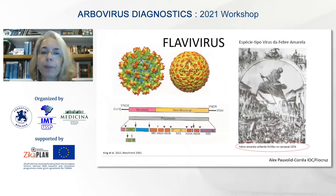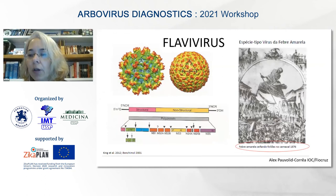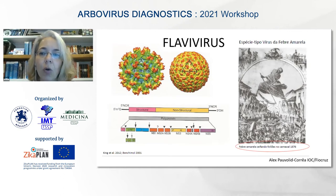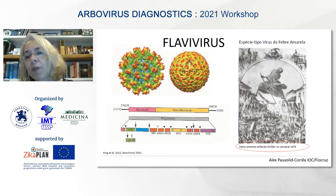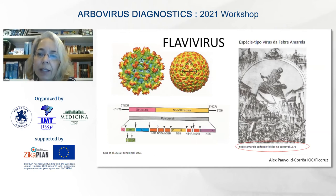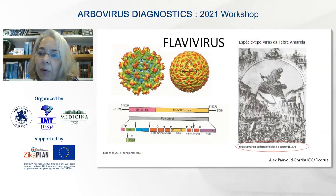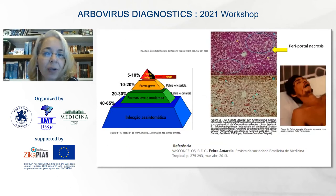Going on from Brazil, the prototype of the flavivirus phylum is the yellow fever virus — a small virus encoding just seven proteins. An old picture of a carnival in the late 19th century was canceled because of a yellow fever outbreak. That's like now we are in the pandemic and have also canceled our carnival.